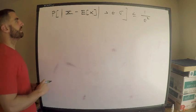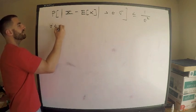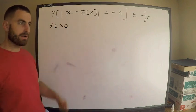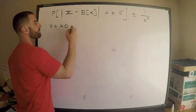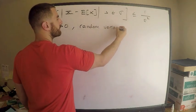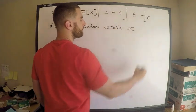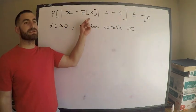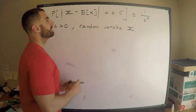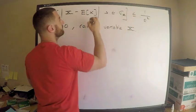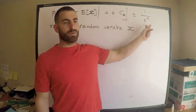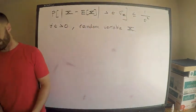This is true for all t greater than zero. The expectation — the mean — is E of x, and sigma is the standard deviation of x. So we have this bound: it's bounded above by 1 over t squared.